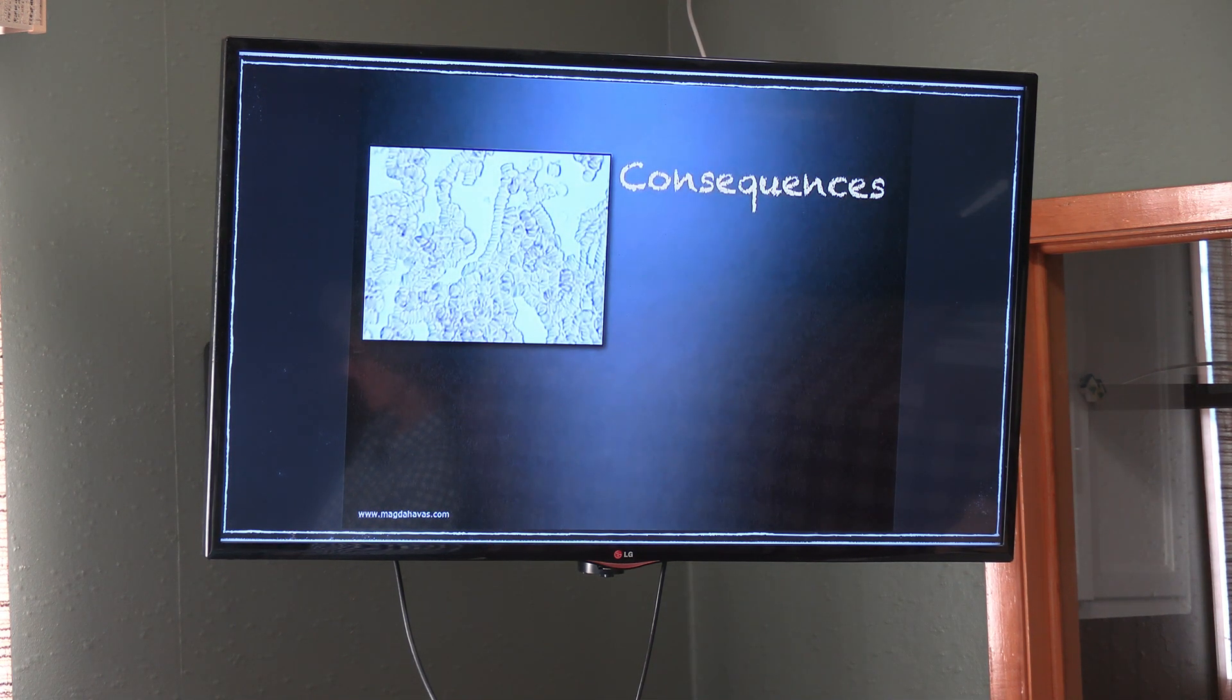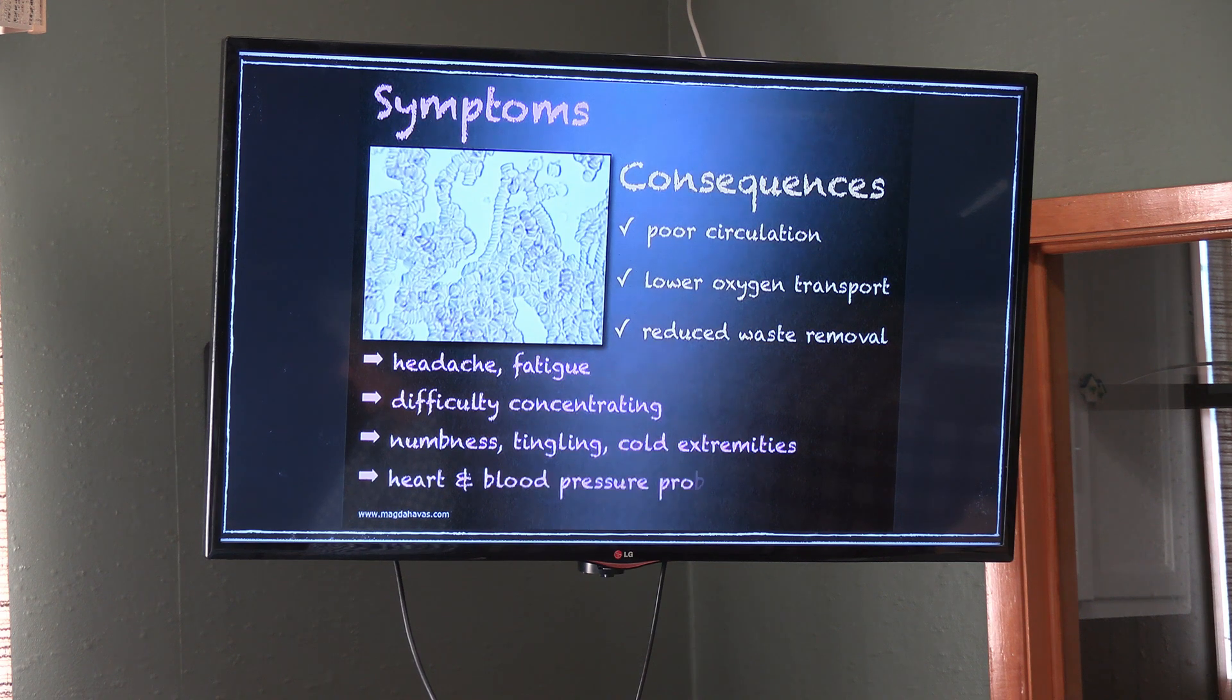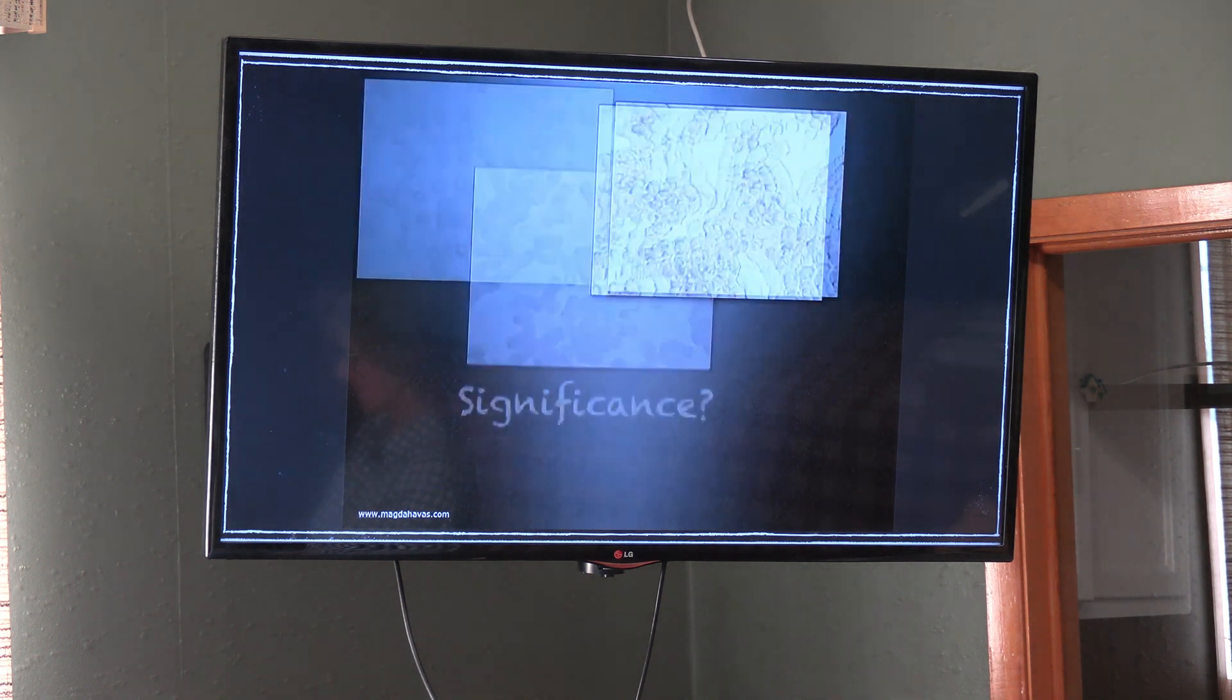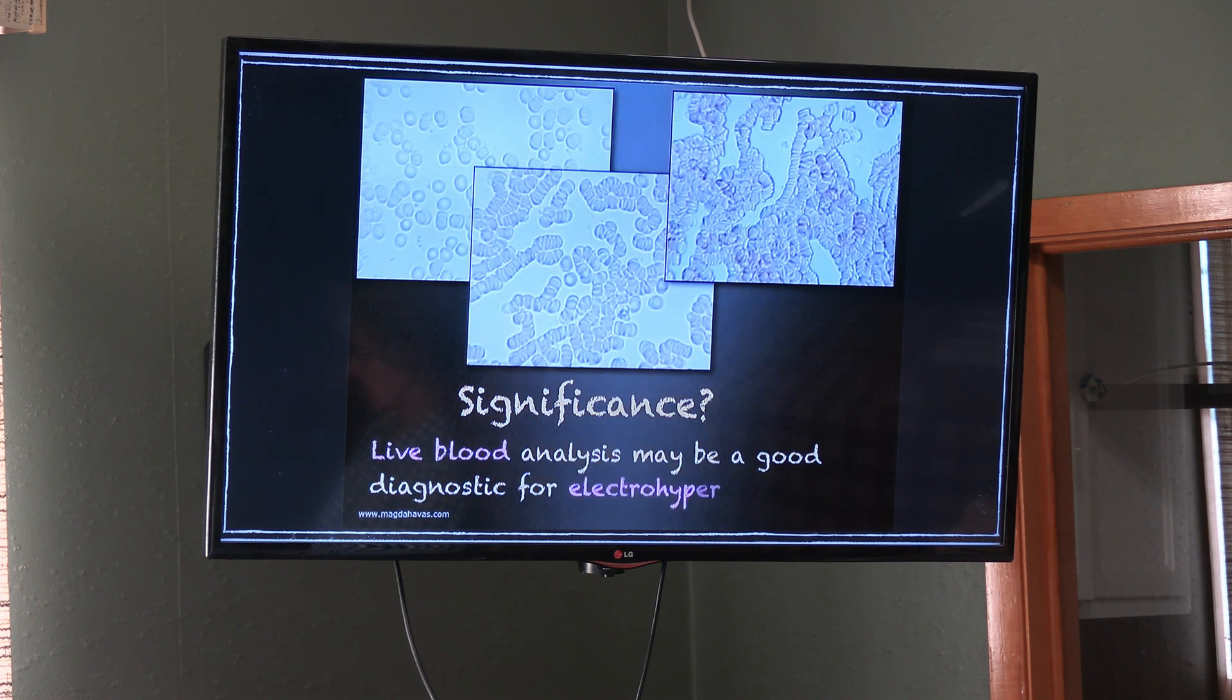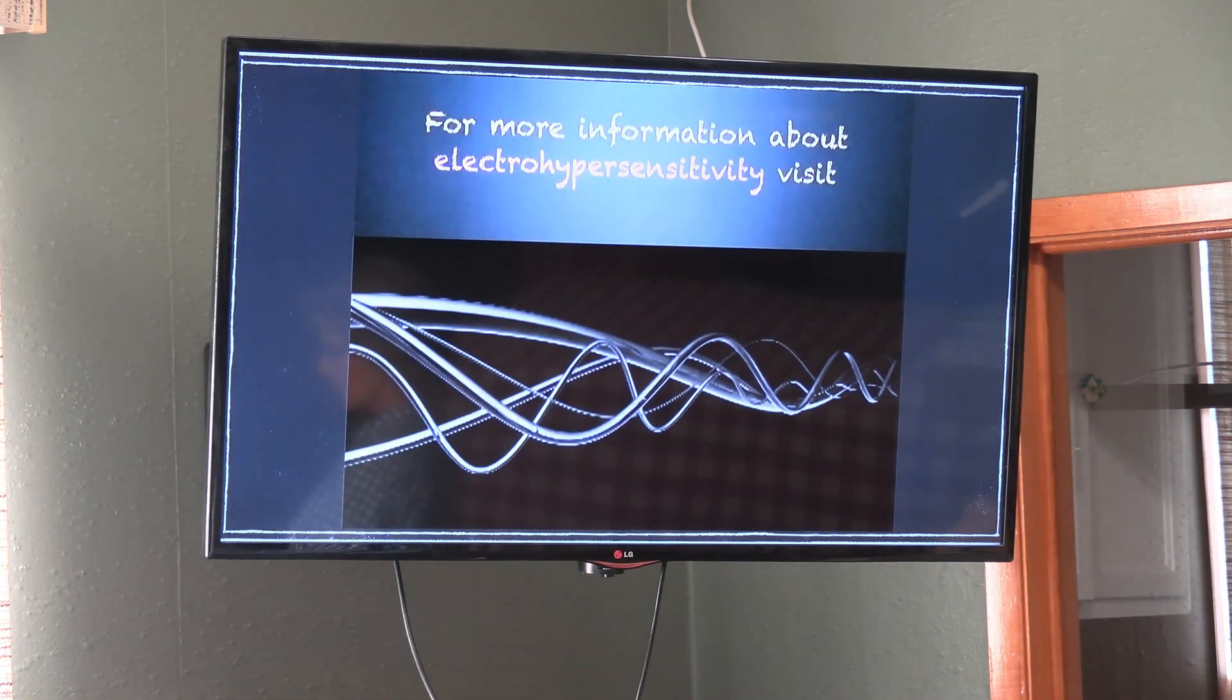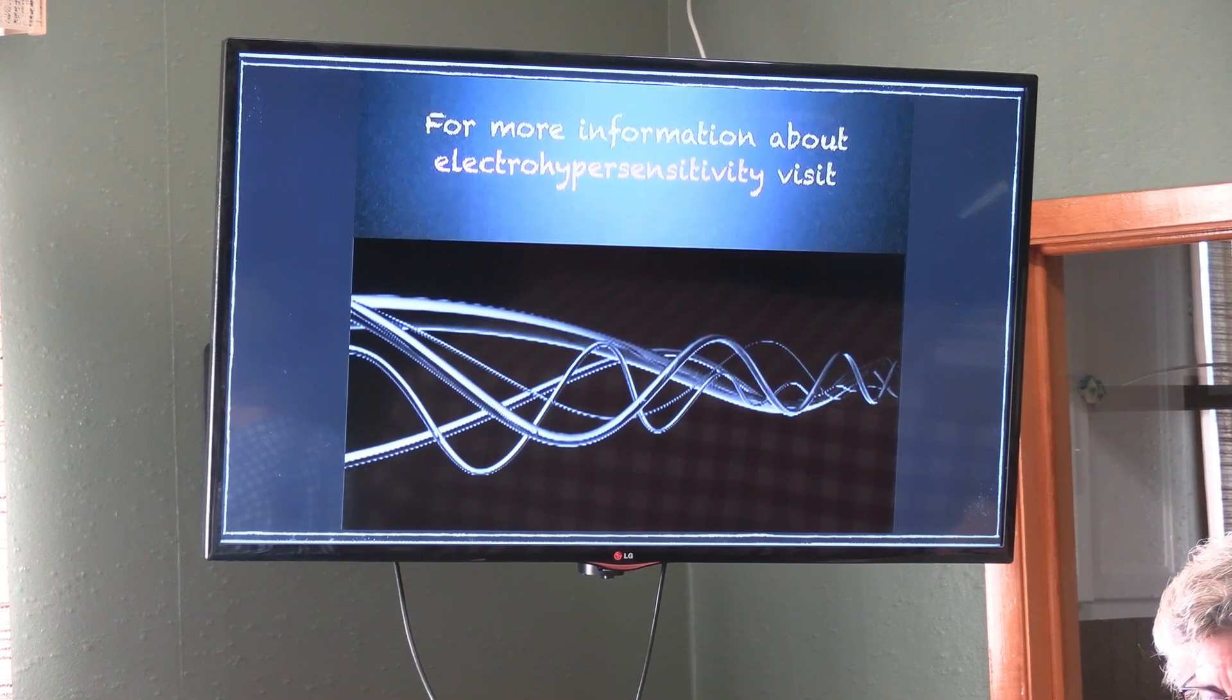What are the consequences of rouleau formation? Poor circulation resulting in lower oxygen transport to cells and reduced waste removal. What are the symptoms someone may experience? Headaches and fatigue, difficulty concentrating, numbness, tingling, and cold extremities, and possibly heart and blood pressure problems, including risk of stroke. What is the significance of this? Live blood analysis may be a good diagnostic for electrohypersensitivity.